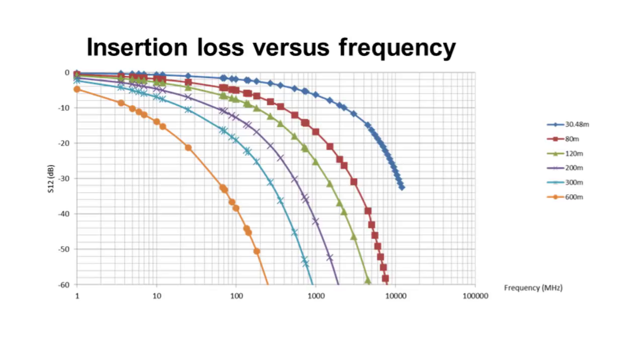One a data rate versus cable reach limitation. For example using a 600 meter cable your fundamental frequency has to be under 180 megahertz meaning the data rate has to be 360 megabits per second or less.